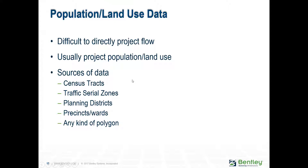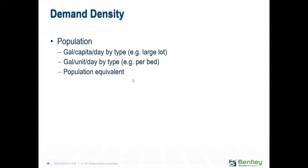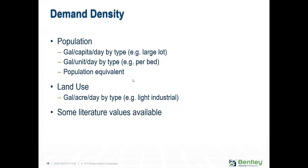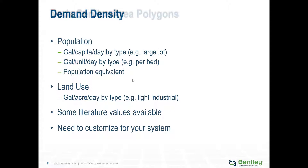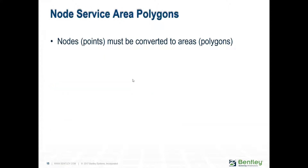You can use census data, planning districts, or any available information and derive a density — knowing how many people will be in a polygon, then determining average per-person per-day usage. You can find literature values for this or develop your own system-specific values.